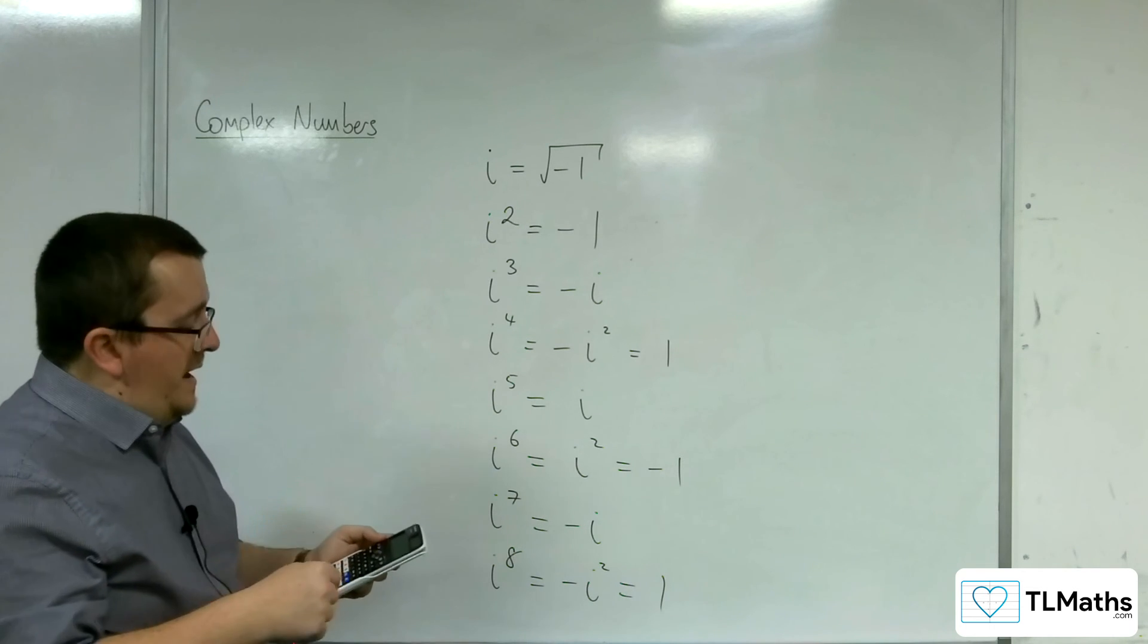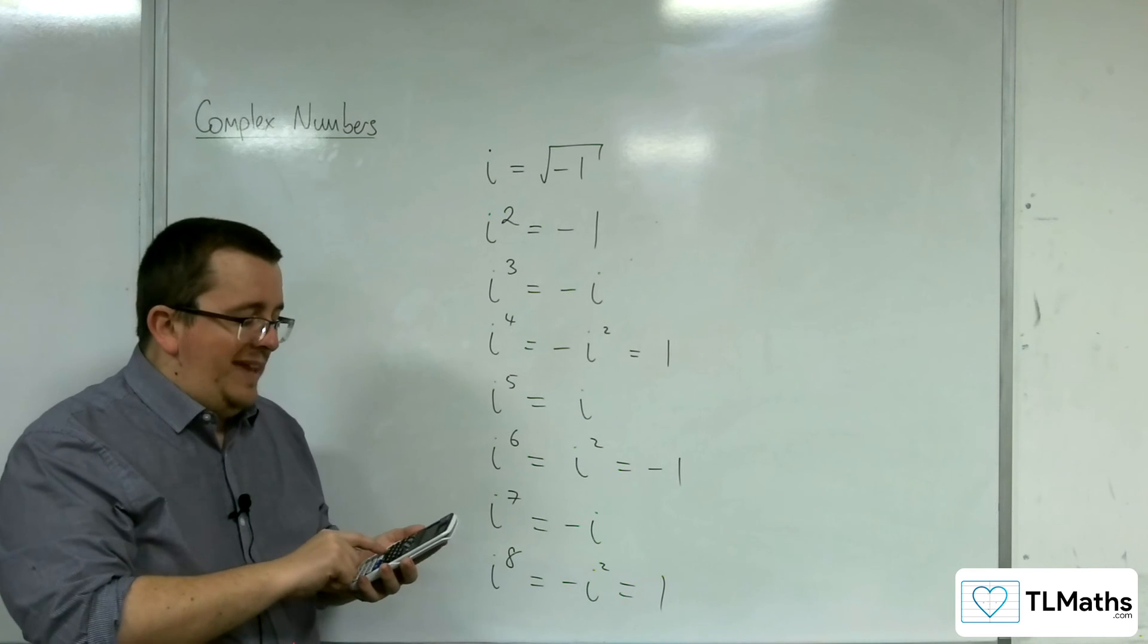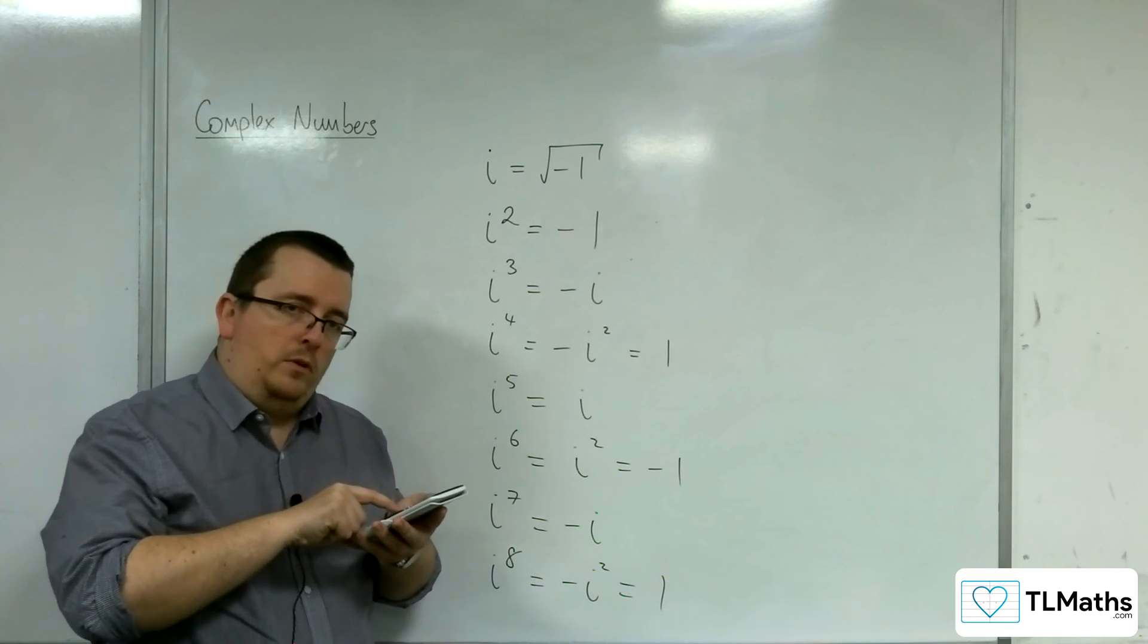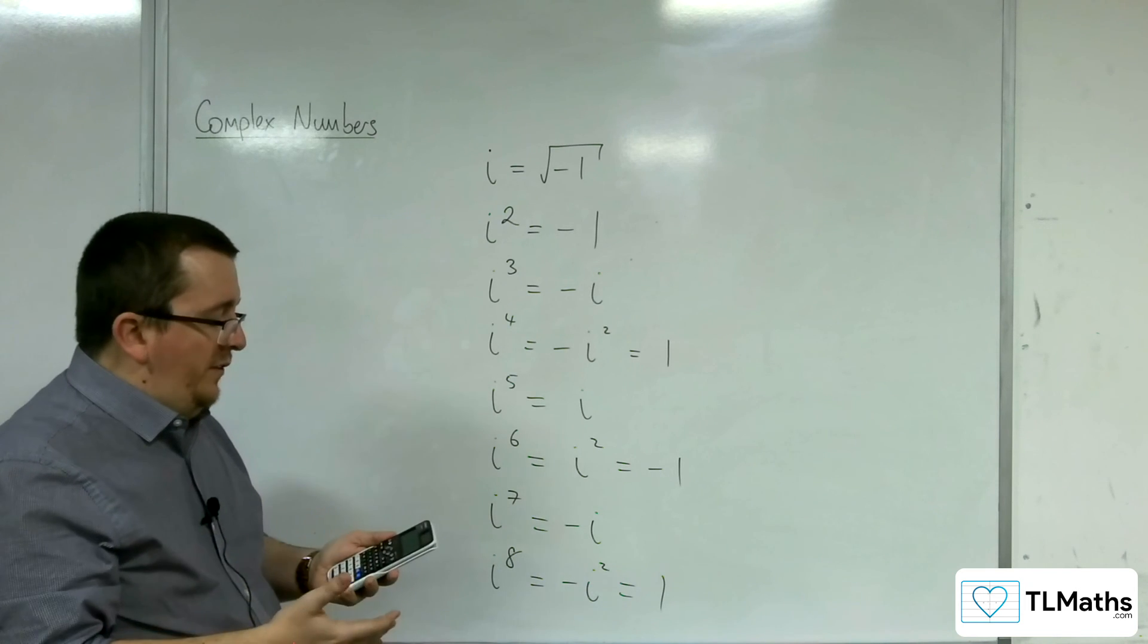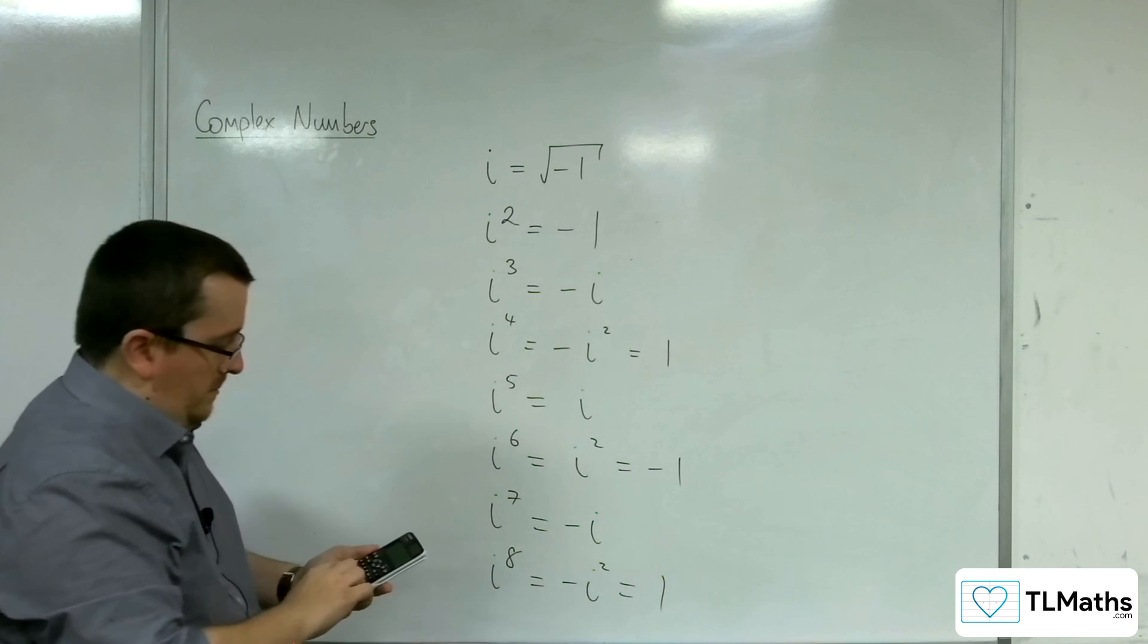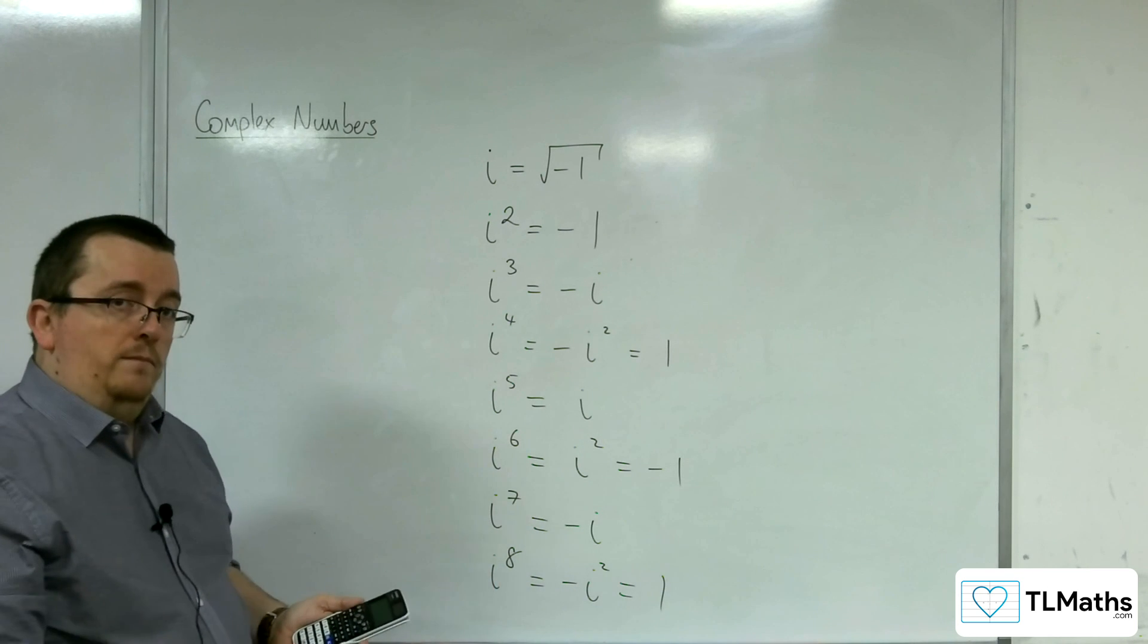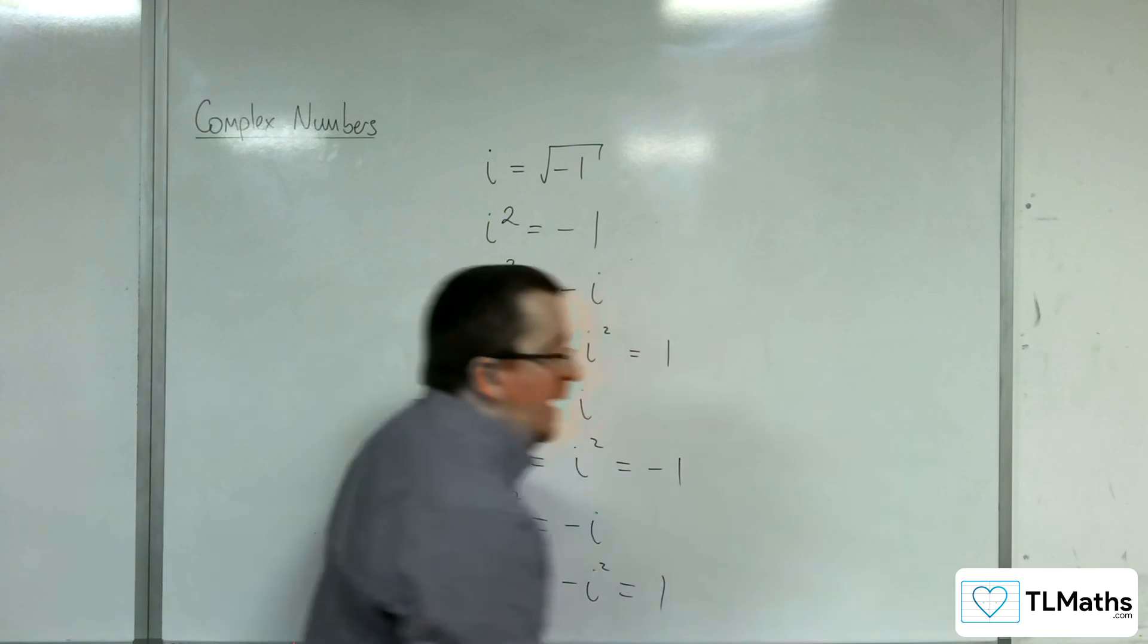Then you can find i by pressing the button that says ENG. You'll see that in purple there is the letter i. So that brings up i, and then you can do to the power of, let's say, 8, and I should get 1. So you can easily check these on your calculator as you go.